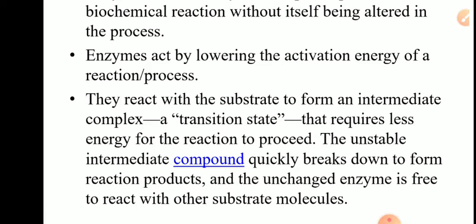Now the unstable intermediate compound formed quickly breaks down and forms the reaction product and enzyme is released free. So E plus S — that means enzyme plus substrate — form ES complex, the enzyme-substrate complex. This complex is unstable and rapidly breaks down into product P, plus enzyme E is regained back. This enzyme can again react with other substrate molecules.